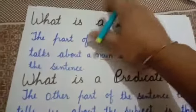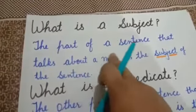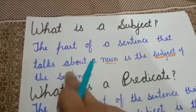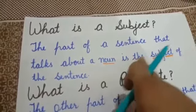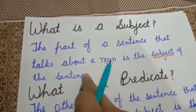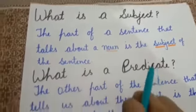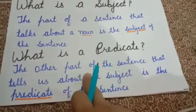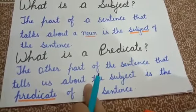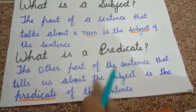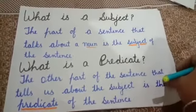What is a subject? The part of a sentence that talks about a noun is the subject of the sentence. And what is a predicate? The other part of the sentence that tells about the subject is the predicate of the sentence.